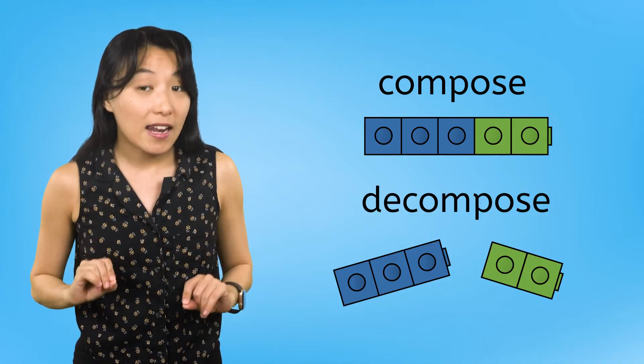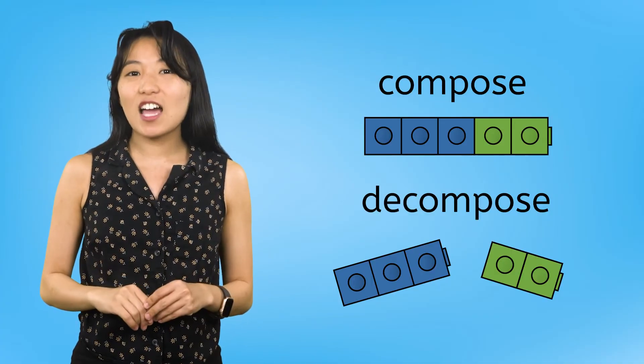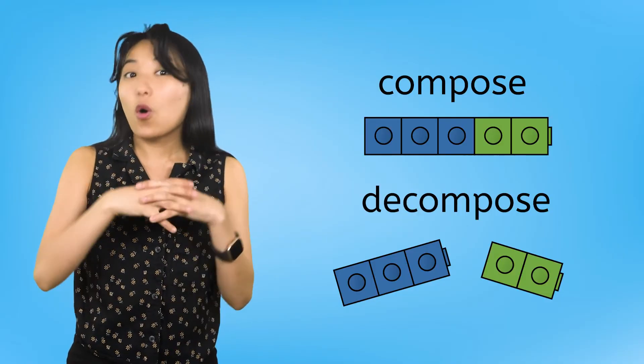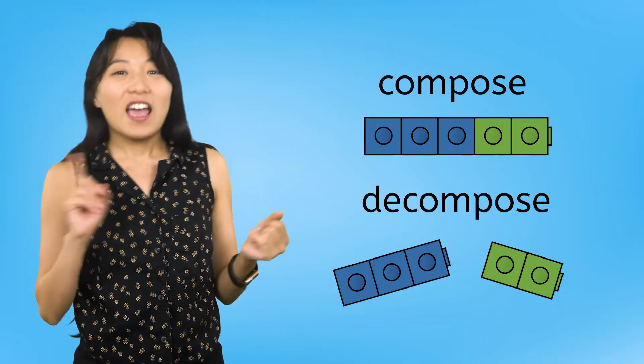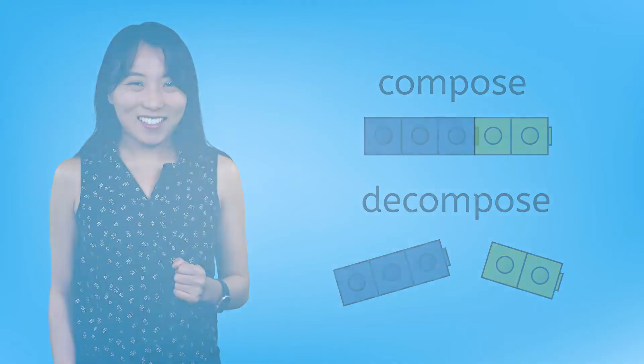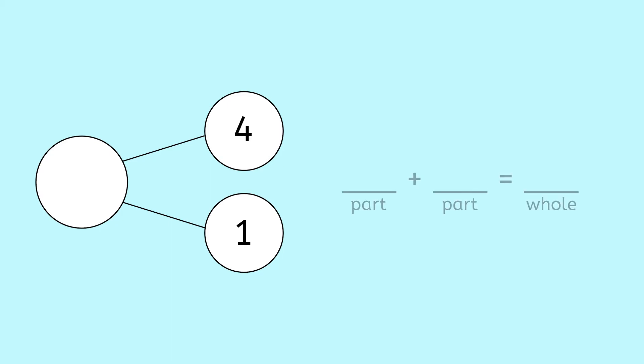Now, let's look at another number bond and decide whether we need to compose or decompose in order to find what's missing. Here, we have the number bond with two parts and no whole. To find the whole, are we going to use addition or subtraction? Addition! So, our number sentence will be part plus part equals whole, or four plus one equals...